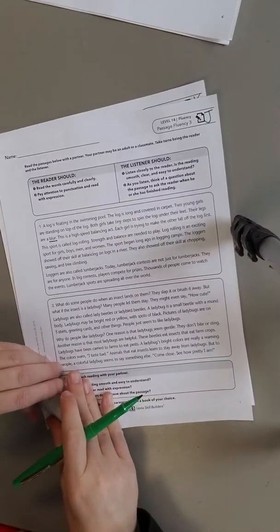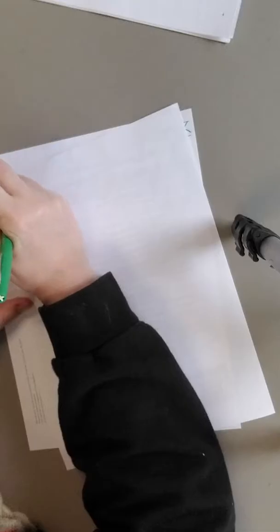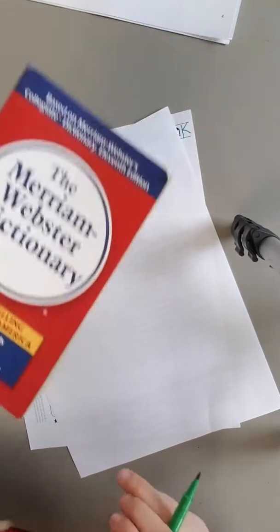So I would underline the word blur, and then on the back, I would write it right here, underline it, and then I'm going to look it up in the dictionary. So you're going to need a dictionary for this.